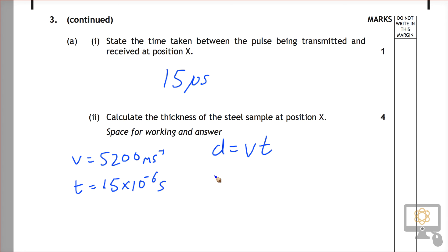So if we do the sum, the distance is equal to the speed, 5200, times the time, 15 times 10 to the minus 6, and that will give us a distance of 0.078 meters.